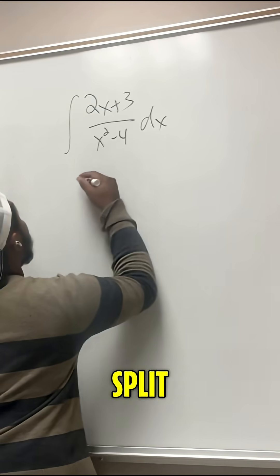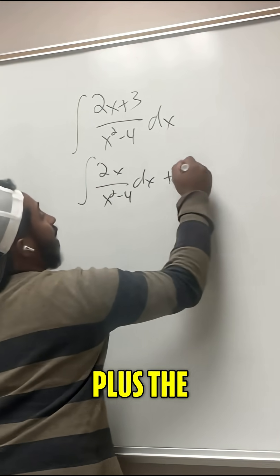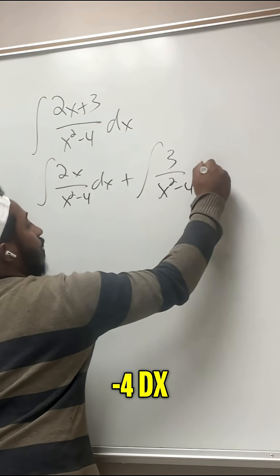This one we're going to split up since there's two terms in the numerator. So we can split this up into the integral of 2x over x squared minus 4 dx plus the integral of 3 over x squared minus 4 dx.